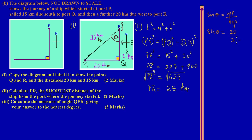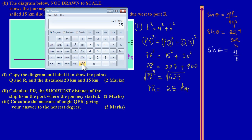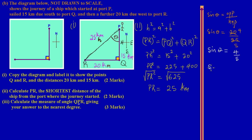So sin(θ) = 20/25. Simplifying by dividing by 5: sin(θ) = 4/5. Converting to a decimal: 4 ÷ 5 = 0.8. So sin(θ) = 0.8. To find theta, we need to take the inverse sine of both sides.